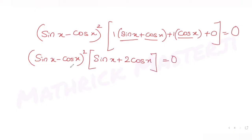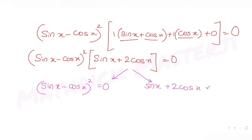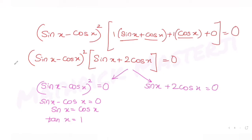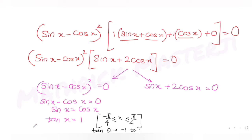In the interval x from minus pi over four to plus pi over four, setting the product equal to zero gives two cases. First, (sin x minus cos x)² = 0 means sin x = cos x, so tan x = 1. In this interval, tan x ranges from minus one to plus one, so tan x = 1 gives exactly one solution: x = pi over four. That's one root.